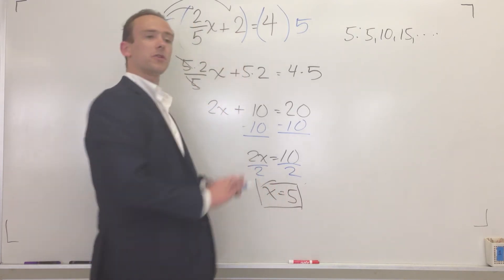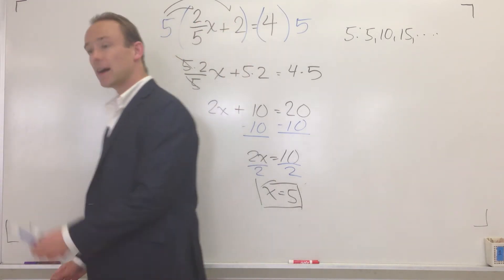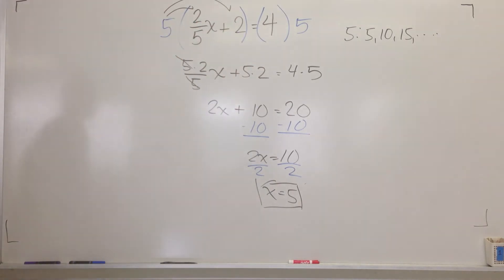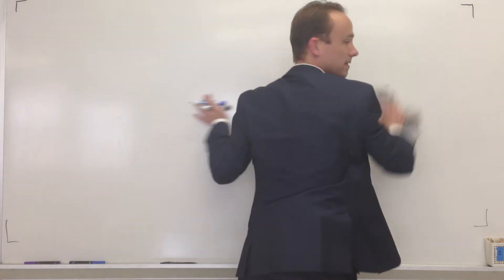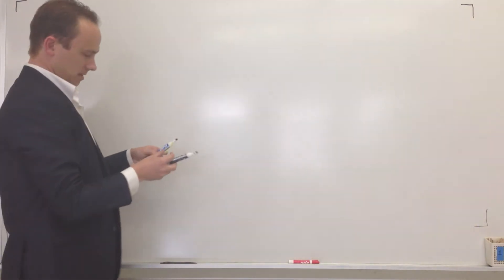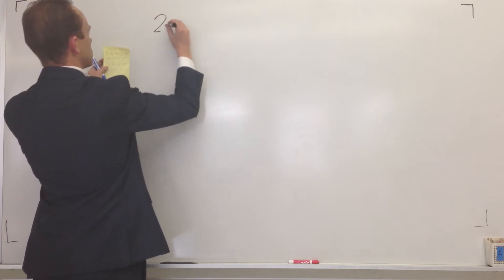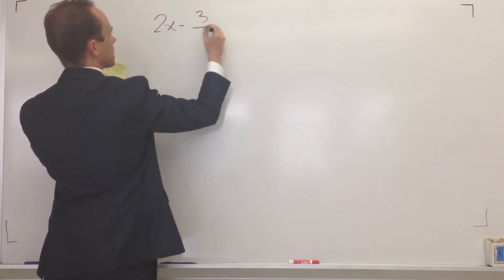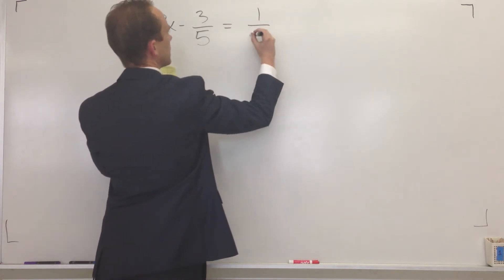Lesson. If you don't like fractions, just blow them up. Let me get you another problem to try. Let's see here. Let's go with two x minus three fifths is equal to one half.